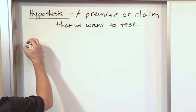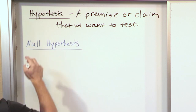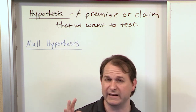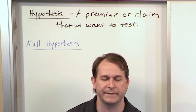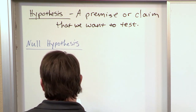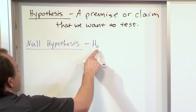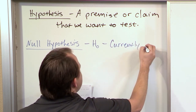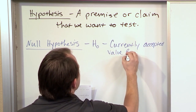Now we're going to talk about something called the null hypothesis. The word null generally means zero or something empty. When we're talking about the null hypothesis, we're talking about the default hypothesis — the thing that's kind of established. We denote that in statistics as H with a small zero, H-naught. What this is is the currently accepted value for a parameter.